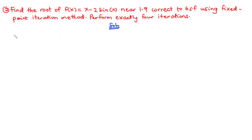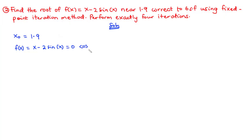First of all, we need to understand that we have the value of x₀ to be 1.9. Like we did in the previous example, we have a root finding problem of the form f(x) = 0, so f(x) = x - 2sin(x) = 0. We need to transform this into a fixed point problem of the form x = g(x), such that the absolute value of g′(x) is less than 1 at x = x₀.